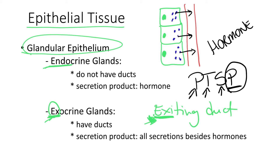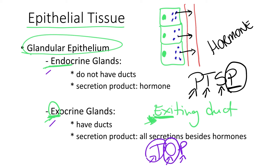Now, we have glands that have both endocrine and exocrine tissues. These glands are called TOP glands, because imagine — they have both types of tissues. The TOP glands are the testis, ovaries, and pancreas. So testis in males, ovaries in females, and the pancreas are mixed glands. They contain both endocrine and exocrine tissues.